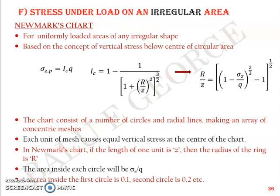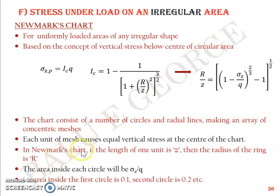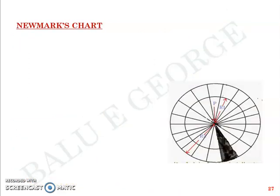A Newmark's chart looks like this. You have different concentric circles and radial lines stretching outward. You have radius r and z marked here. The length of one unit is z, the radius of the ring is r, and the area inside each circle will be σz/q. That's the concept of Newmark's chart.